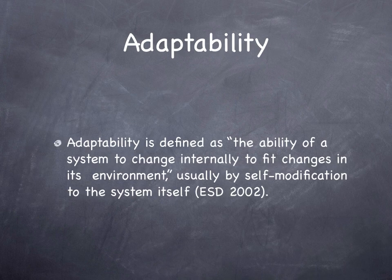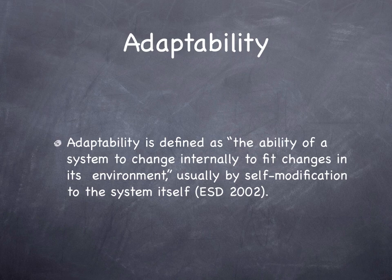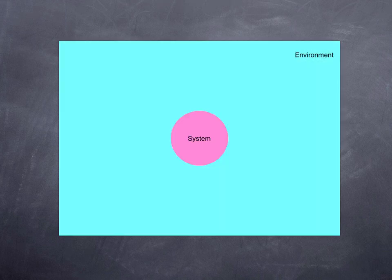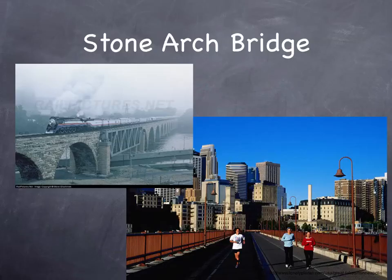Adaptability is defined as the ability of a system to change internally to fit changes in its environment, usually by self-modification to the system itself. We start with the same system — the yellow circle — embedded in the same environment, the green rectangle. If the system changes when the environment changes, we say it is adaptable. The Stone Arch Bridge once saw trains; now it sees runners. It is adaptable.